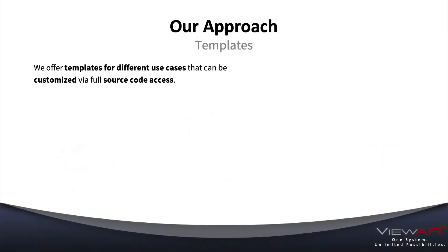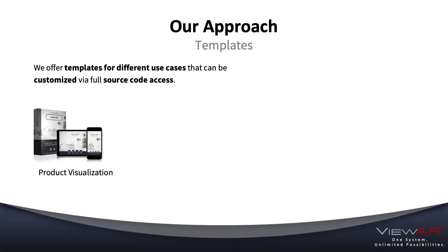The approach we take is to provide so-called templates for certain verticals with full source code access. For example, in the field of product visualization — such as furniture — we have features like making a room empty, switching materials, filling a shopping cart, and saving perspectives for later editing.